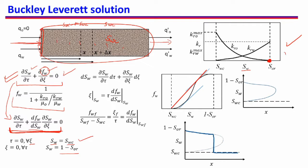Using the relative permeability curve with this equation, we get this kind of S-shaped curve for FW versus SW. We will do examples of this in later videos. Now we want to solve SW as a function of time and xi. For that we use the method of characteristics, where we follow a particular water saturation. Using the mass balance equation, we found that the distance travelled by a particular saturation at a given time is dependent on the slope of the FW versus SW curve.